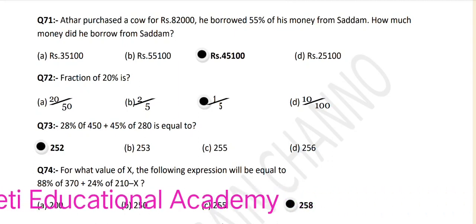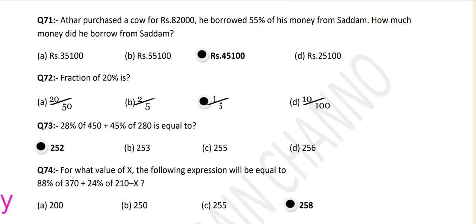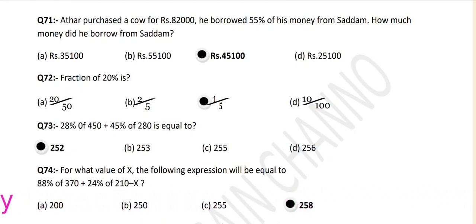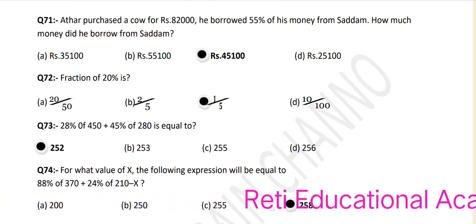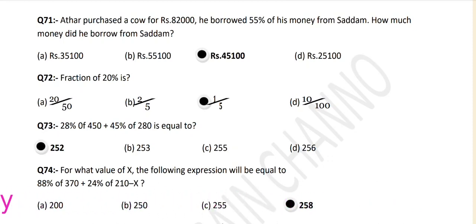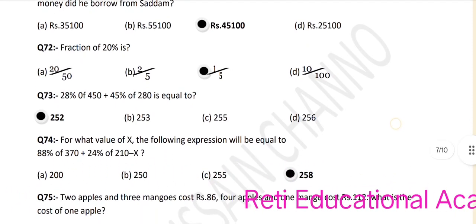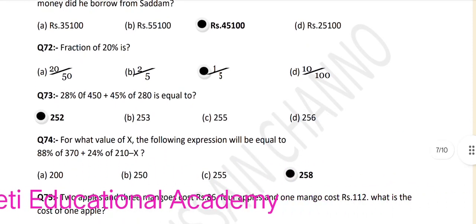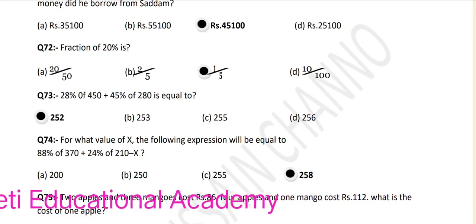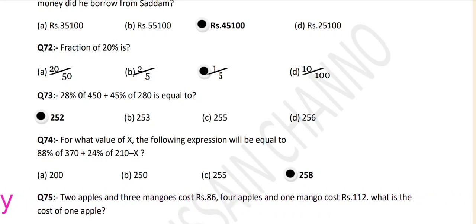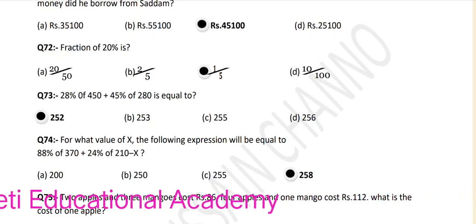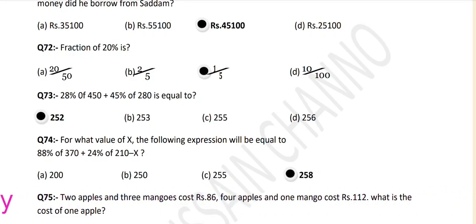We learn this in class. Question number 72: The fraction of 20 percent is 1 upon 5. Question number 73: 28 percent of 450 plus 45 percent of 280 is equal to what? First we will find out 28 percent and 45 percent of these numbers and then we will add them.